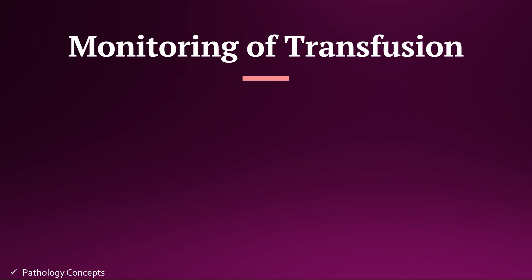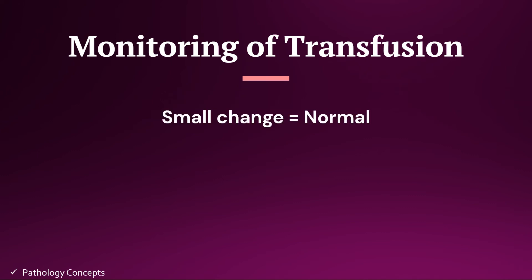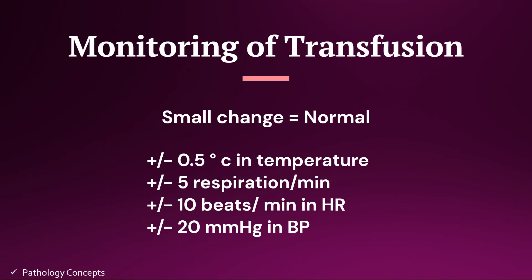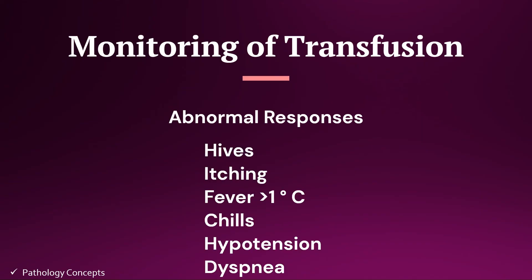Now let's learn how to monitor transfusion. When transfusion is ongoing, vital signs are monitored and typically recorded at 15-minute intervals. Small changes in vital signs during transfusion may be considered normal, including: plus or minus 0.5 degrees centigrade in temperature, plus or minus 5 respirations per minute, plus or minus 10 beats per minute in heart rate, and plus or minus 20 mmHg in blood pressure. Abnormal responses include hives, itching, fever greater than 1 degree centigrade above the starting temperature, chills, hypotension, and dyspnea.